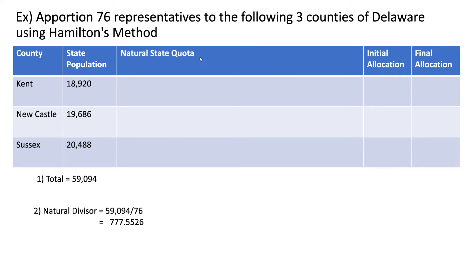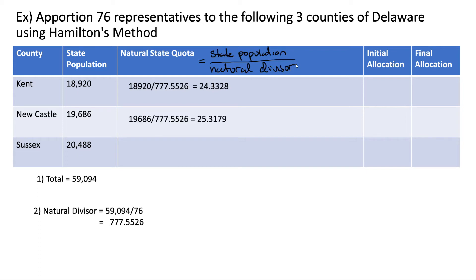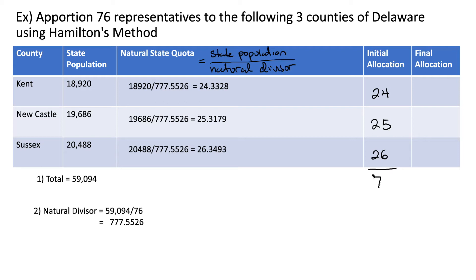Now we need to find our natural state quotas. Natural state quotas are equal to state population divided by the natural divisor. So for Kent, we divide Kent's population by the natural divisor, and the same for Newcastle and Sussex. For our initial allocations, we simply get rid of all of the decimals and allocate each state that number of seats. Kent's natural quota is 24.3-something, so its initial allocation is 24. Newcastle's initial allocation is 25, and Sussex's is 26. Adding all of these up gives 75, but our house size is 76, so we still need to give out one more seat.